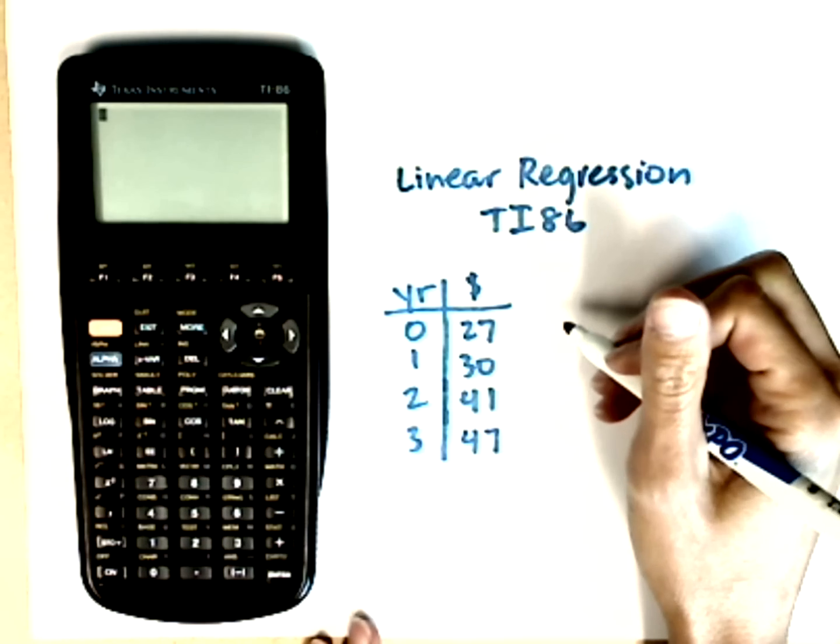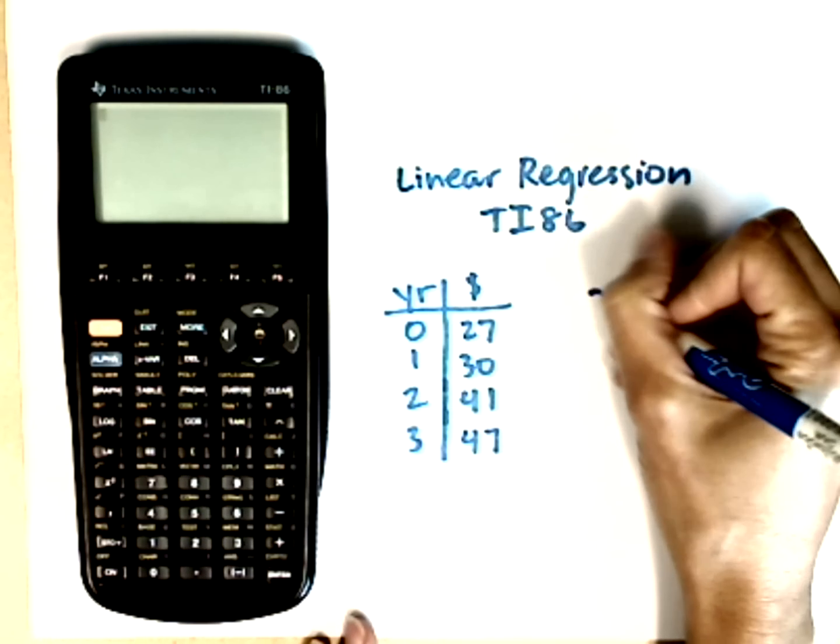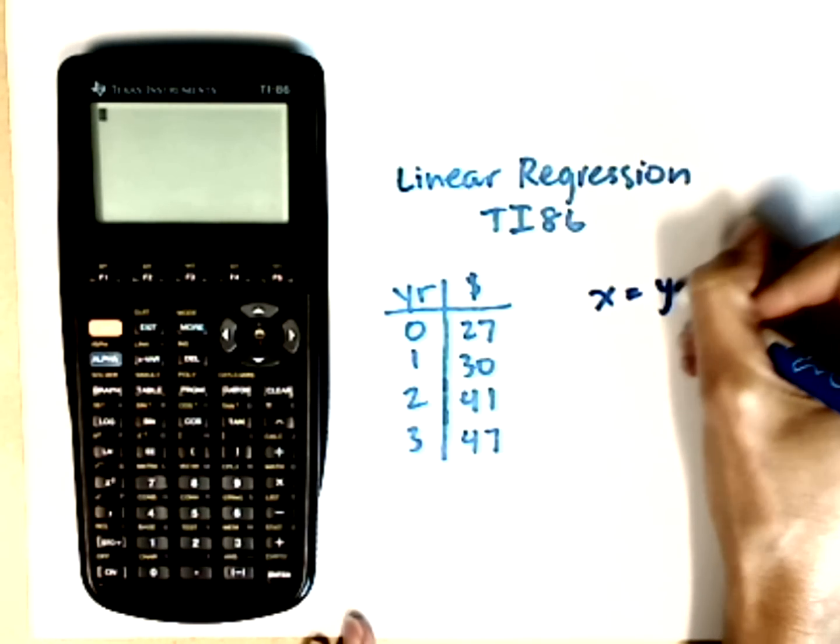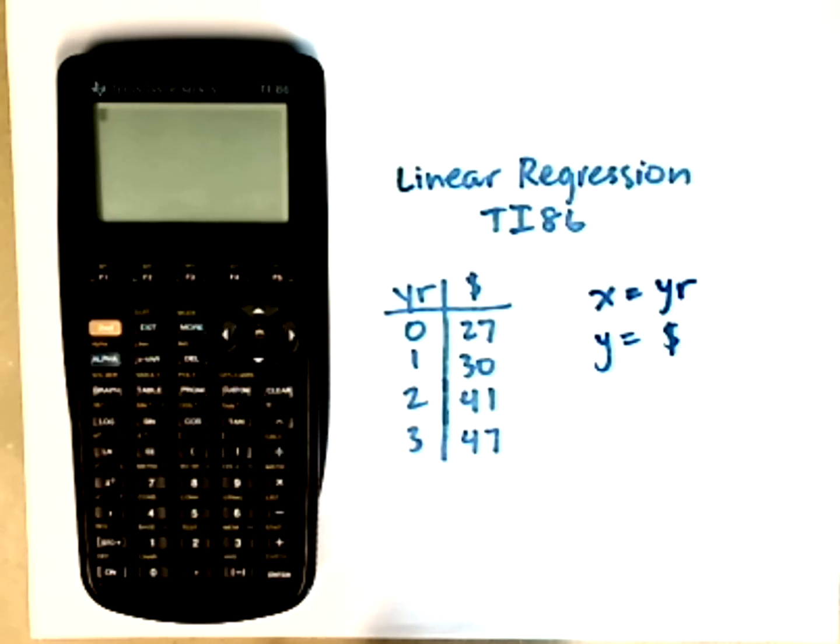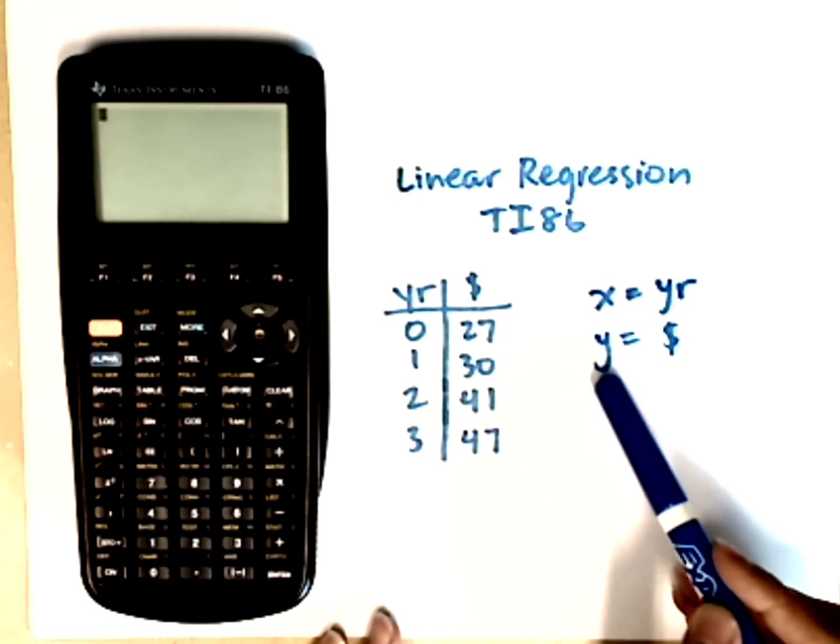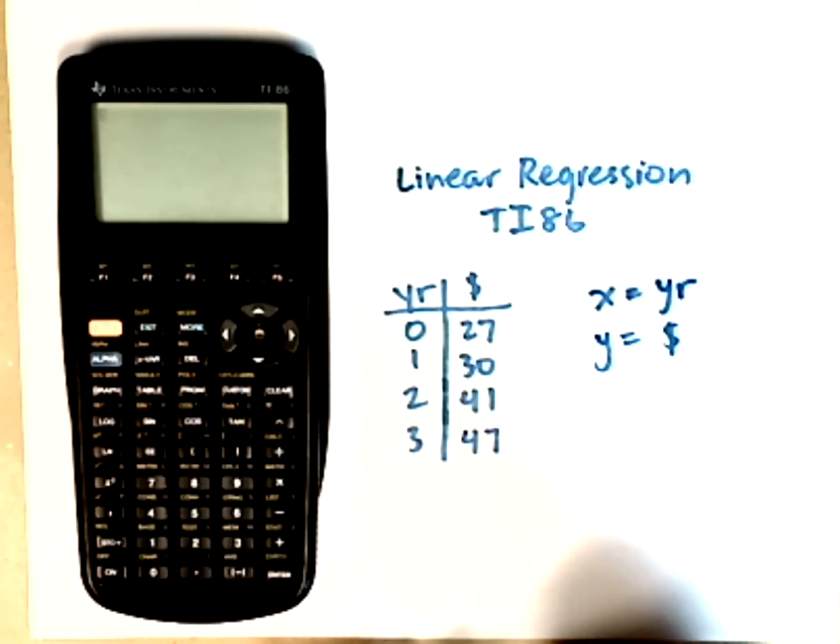So to start, we need to establish that we're going to let our x values represent the year, and our y values represent those dollar amounts, so that when we input the data, we know that we're going to look for y or dollars as a function of x, which would be a function of years.